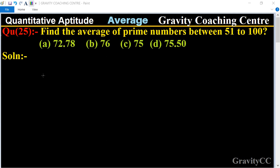In this question, first of all we write all the prime numbers between 51 to 100. So these are 53, 59, 71, 73, 79, 83, 89, and 97.